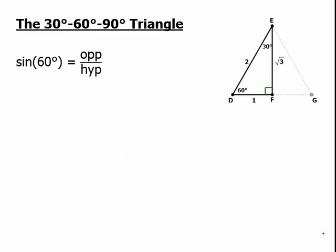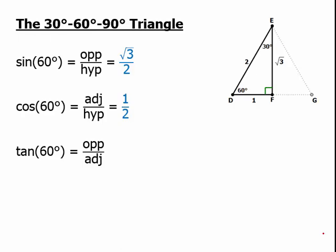Now for the sine of 60 degrees. The opposite over the hypotenuse now is √3 over 2. The adjacent over the hypotenuse now is 1 over 2, or 1/2. And the tangent now, opposite over adjacent, is √3 over 1, which is just √3.